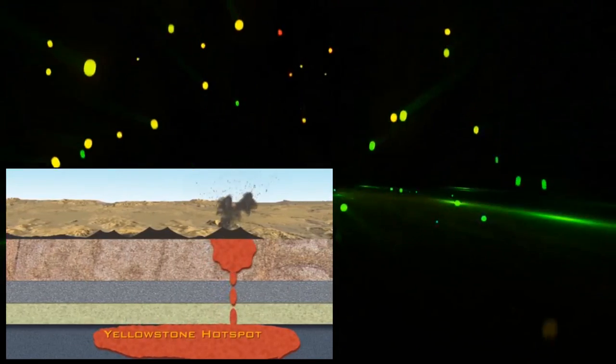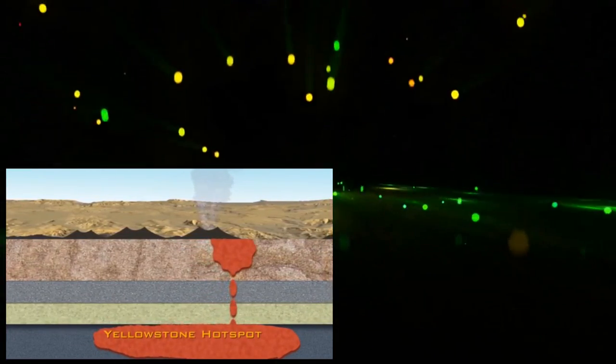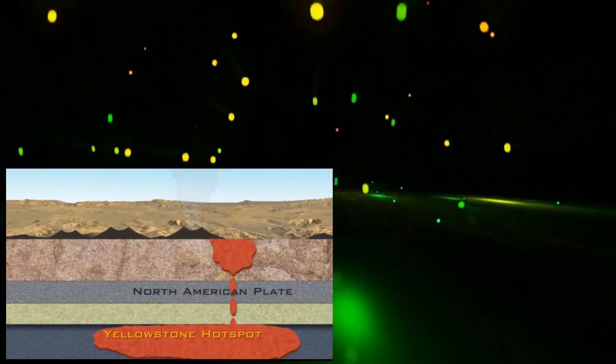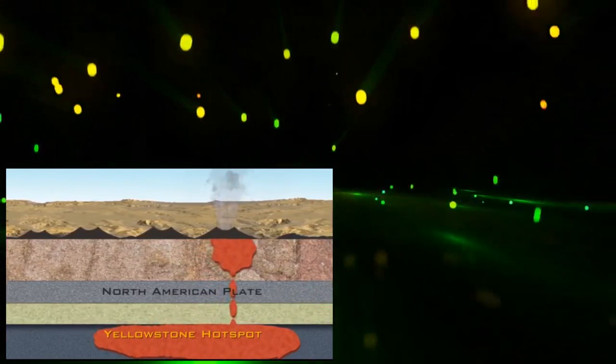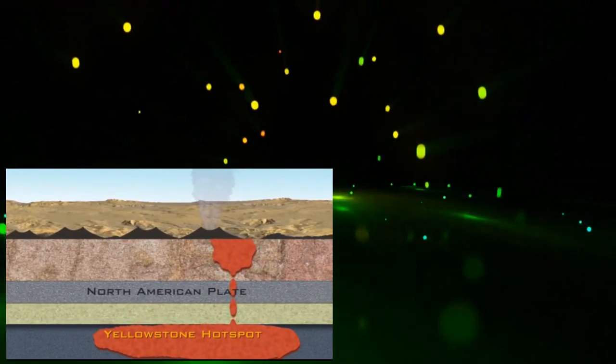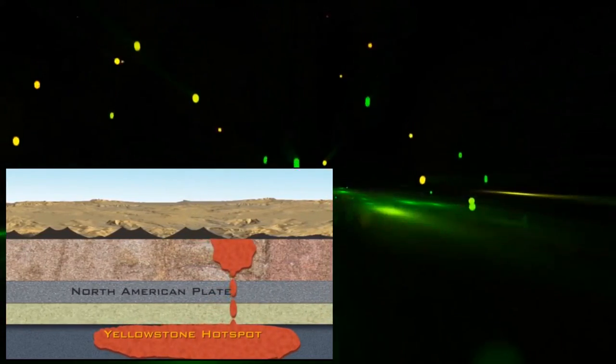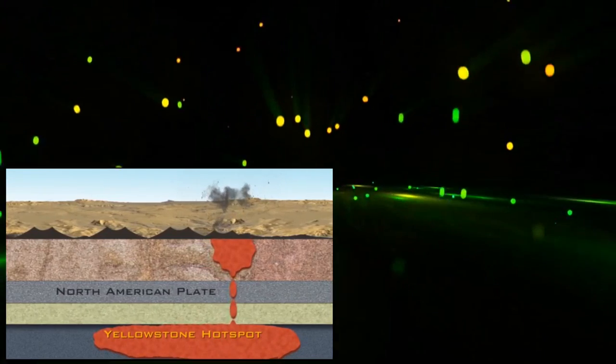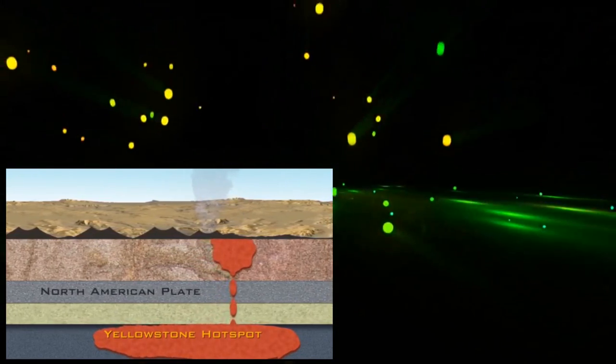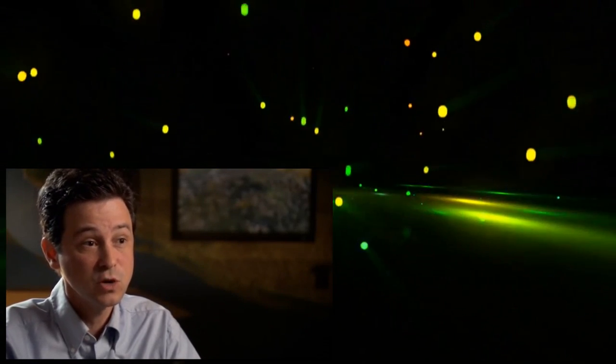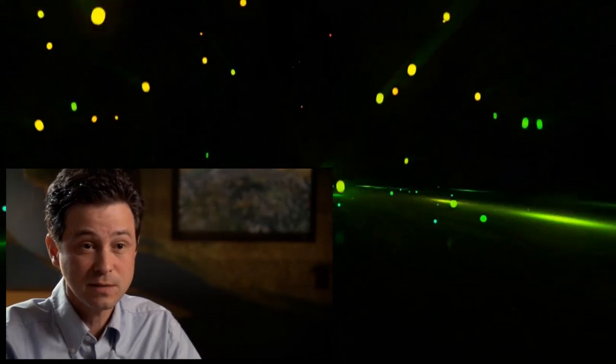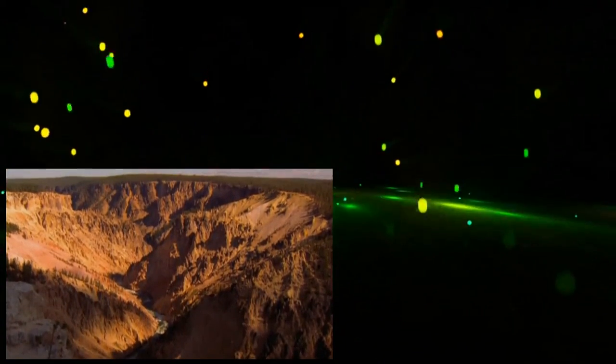The same is true for the Yellowstone hotspot. Above its magma chamber, the North American plate is slowly sliding to the southwest about an inch a year. With each new eruption, a caldera is formed and appears further to the north. We find calderas all the way back into northern Nevada. It's possible there have been as many as 50 eruptions just as big as ones from Yellowstone.